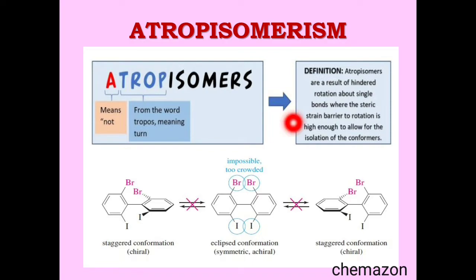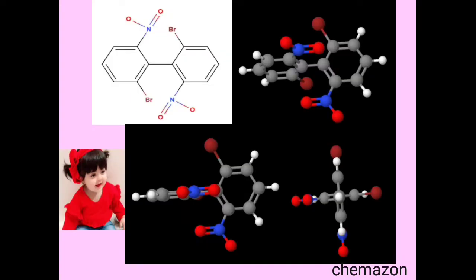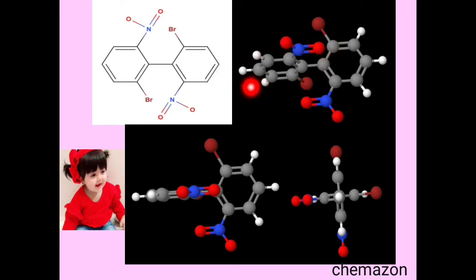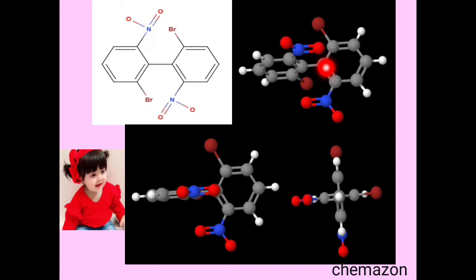These molecules are called conformers — isomers which can rotate across a carbon-carbon single bond. In this example of biphenyls, I have attached four different groups: two nitro groups and two bromine atoms, and this is how it would look in a 3D model. This is the benzene ring, the nitro group with nitrogen in blue and two oxygen groups, the bromine atom in brown. You can see that this phenyl ring is in one plane and this phenyl ring is in another plane perpendicular to it.